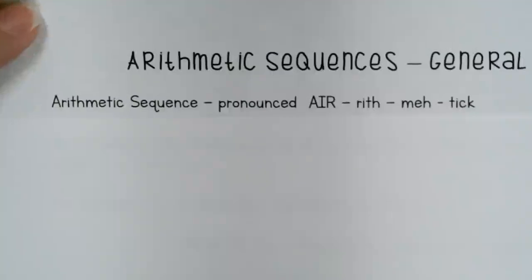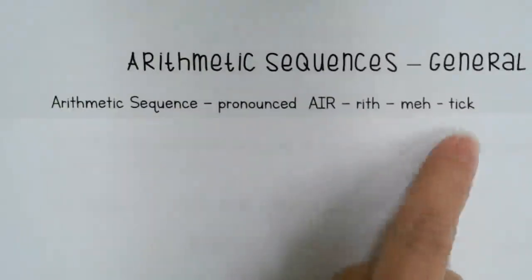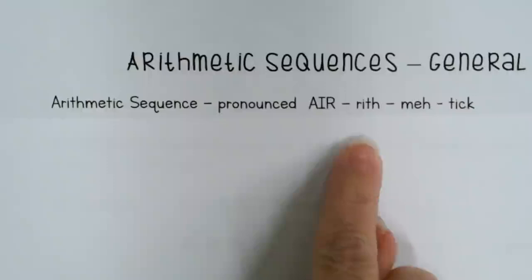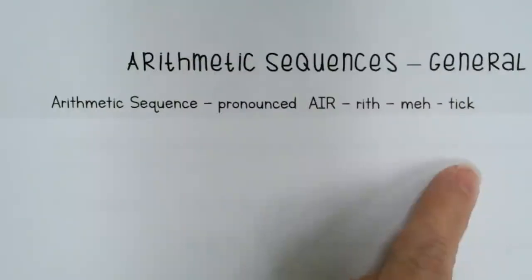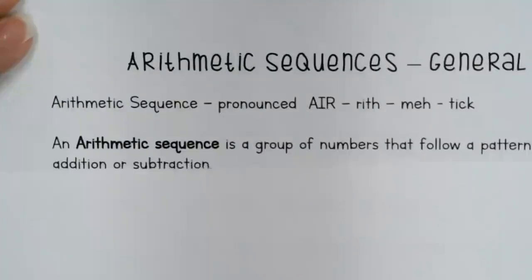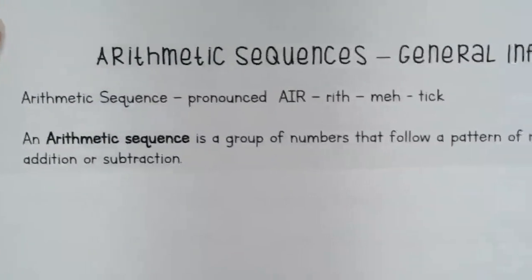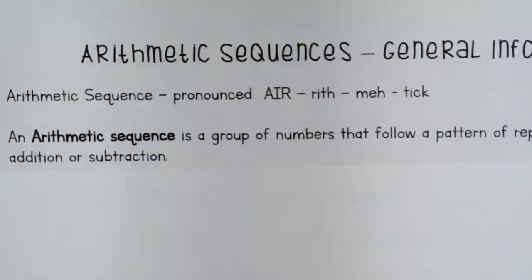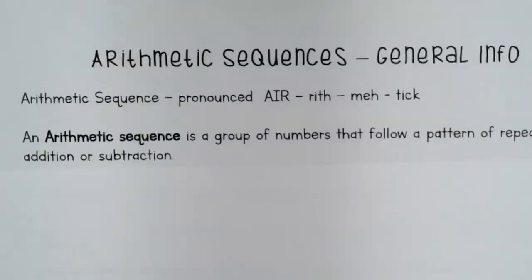First thing — arithmetic sequence. I know you're probably thinking I'm saying it incorrectly, but it's an adjective so it is pronounced 'arithmetic.' So: arithmetic sequence. I don't know if you want to write the pronunciation down, just to help you remember how to say it.